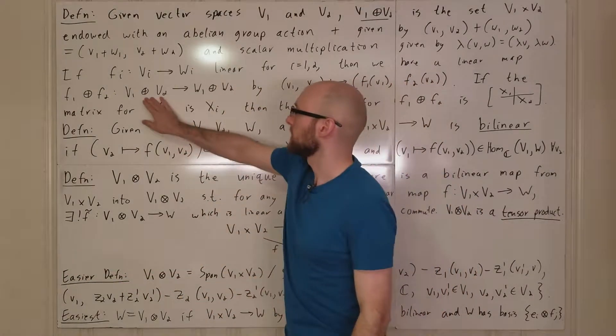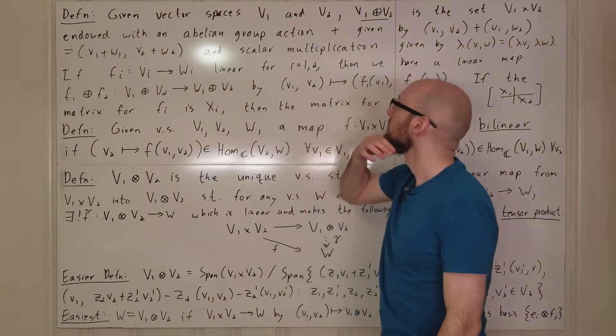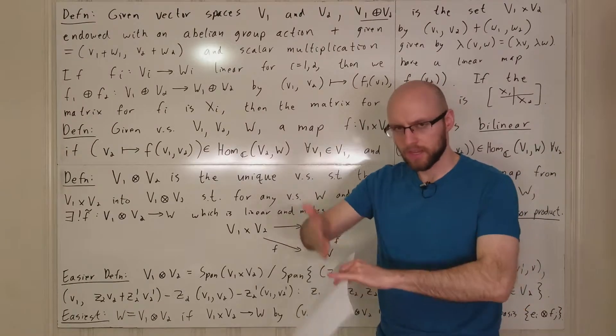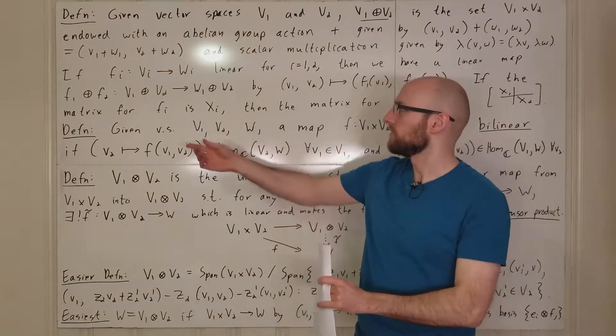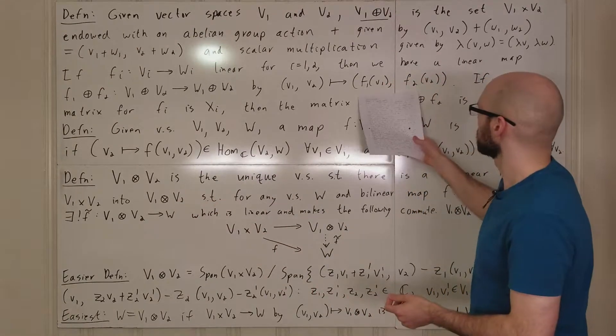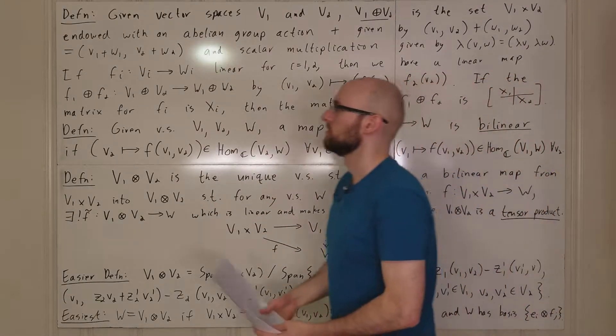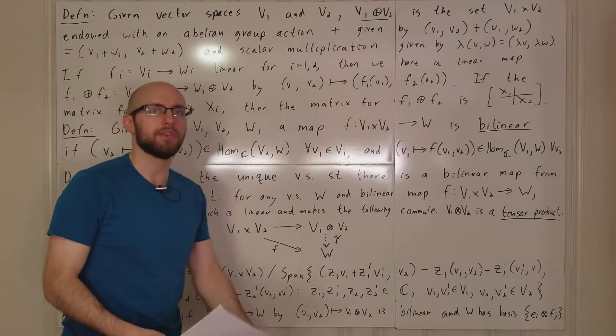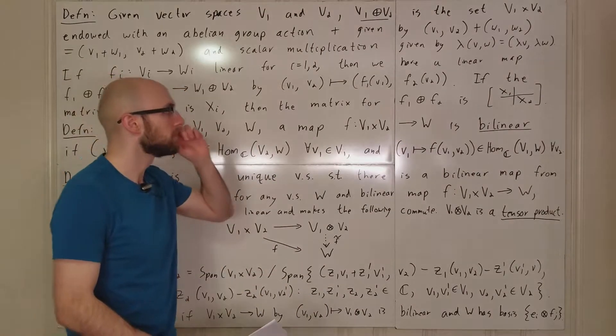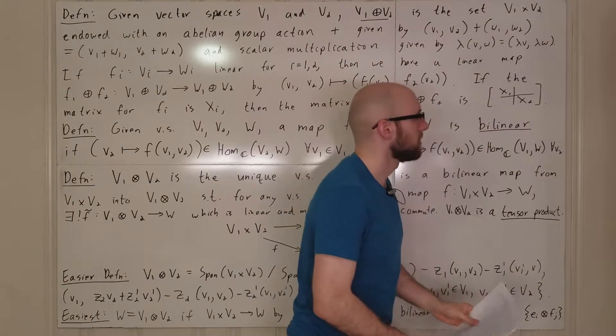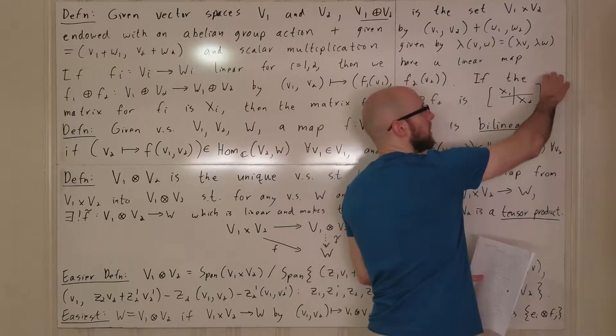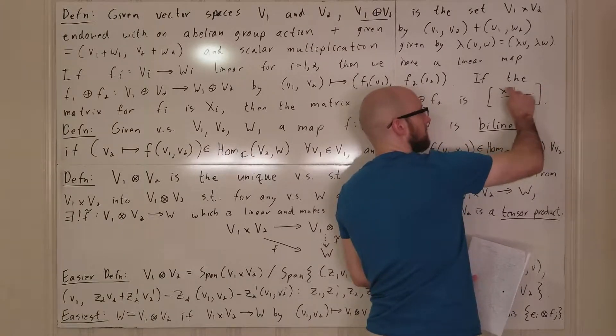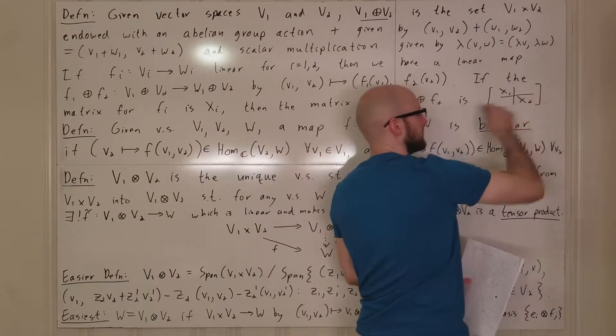And it goes from this direct sum into this direct sum. And it's given by this map. You just take each coordinate, and you map that particular coordinate to wherever FI maps that Ith coordinate. So, as matrices, if F1 has matrix X1 and F2 has matrix X2, then the matrix for the direct sum looks like this. If you multiply by a vector over here, the rows over here are going to be multiplied by X1, and the rows down here are going to be multiplied by X2.